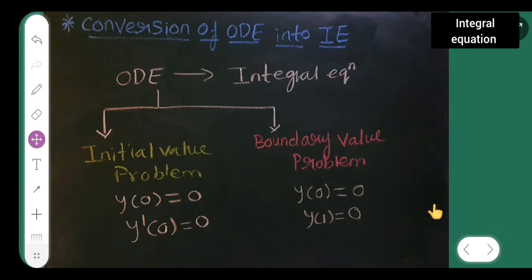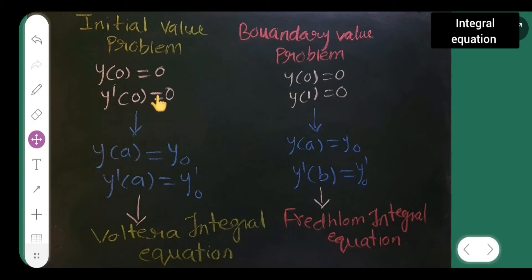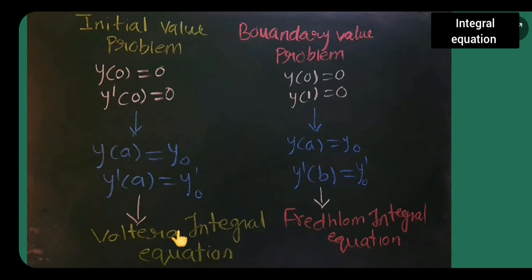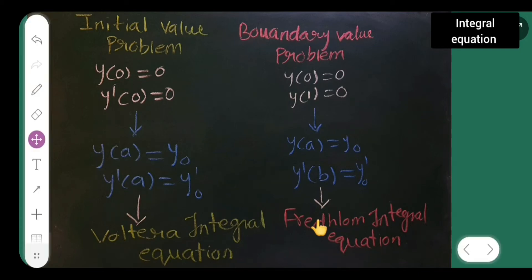In general, for an initial value problem, we write y(a) = y₀ and y'(a) = y₀', where the conditions are at the same point a. For a boundary value problem, the conditions are at different points a and b. An initial value problem converts to a Volterra integral equation, and a boundary value problem converts to a Fredholm integral equation.